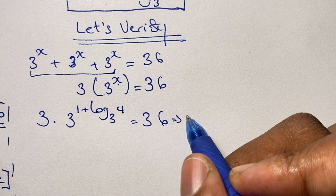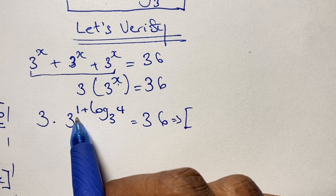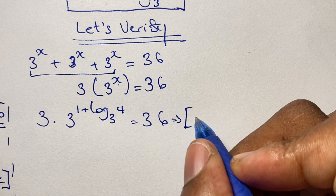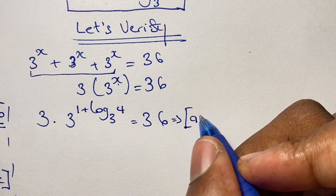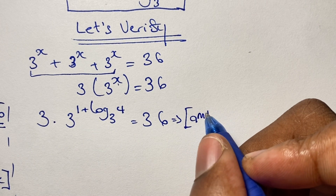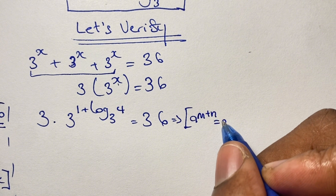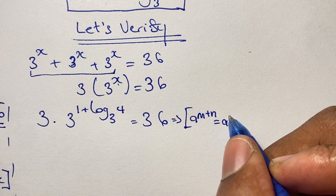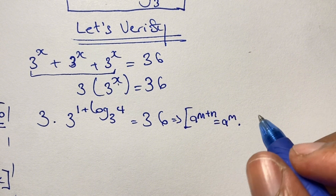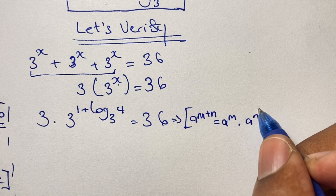From here we look at laws of indices where we can simplify our exponent. In the situation where we have a to the power of m plus n, it is the same as saying a to the power of m times a to the power of n.